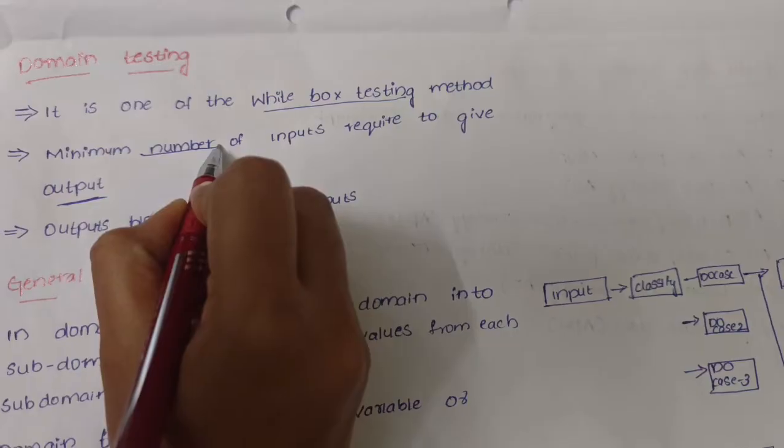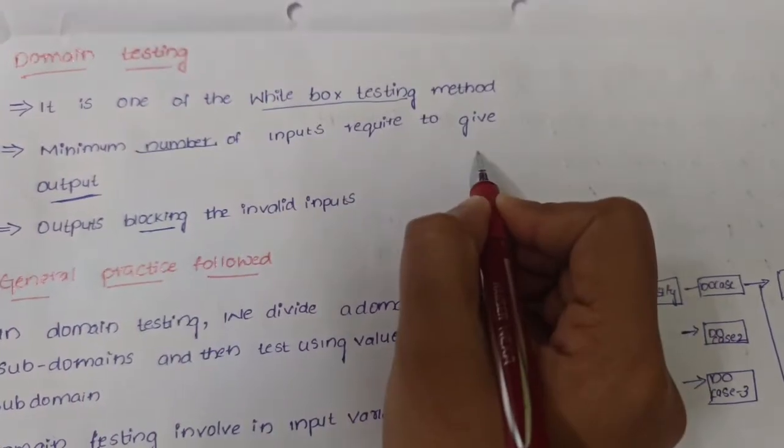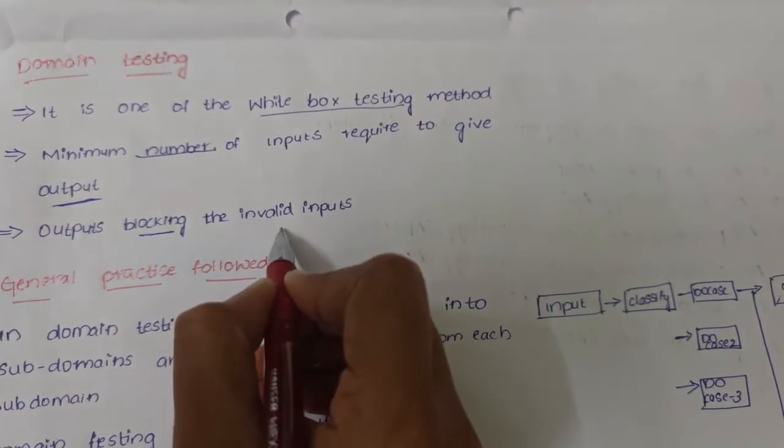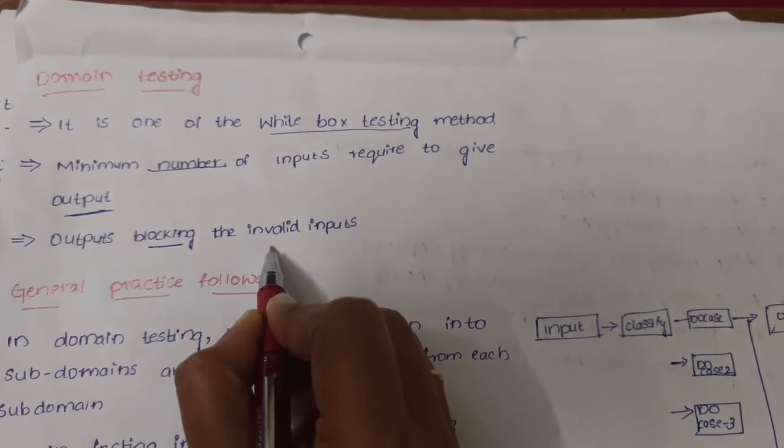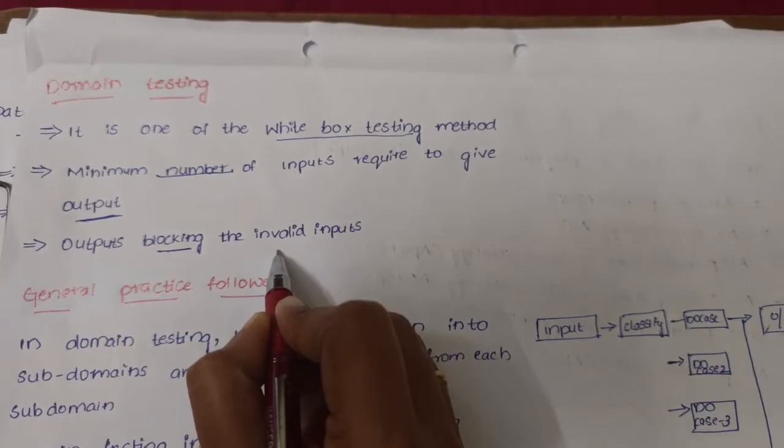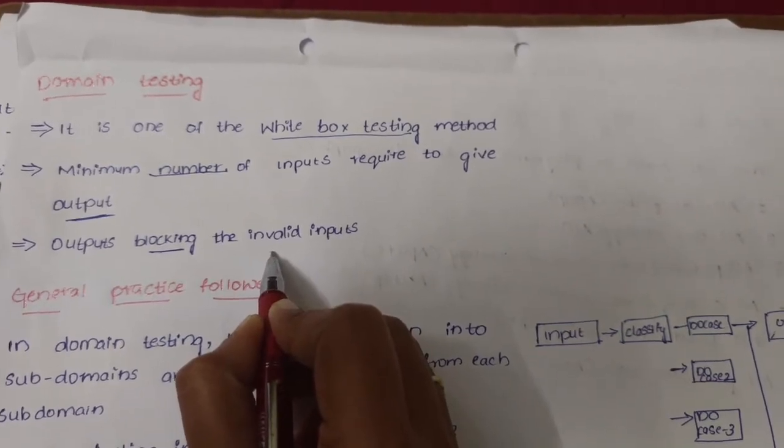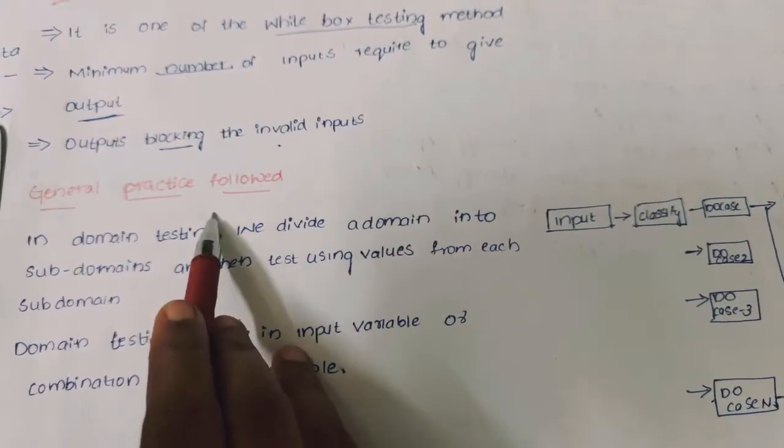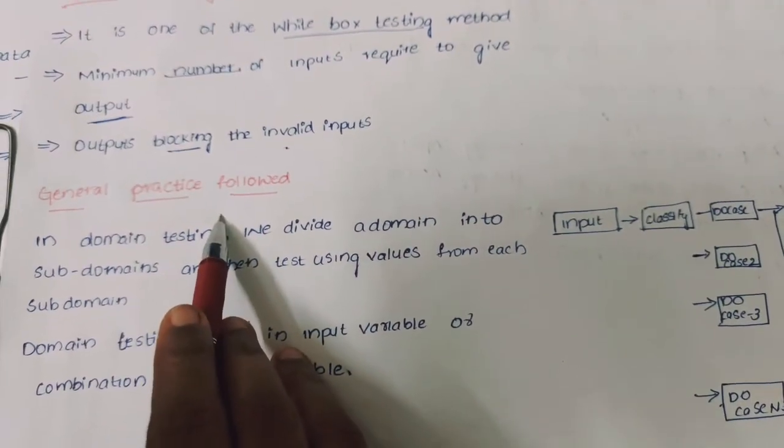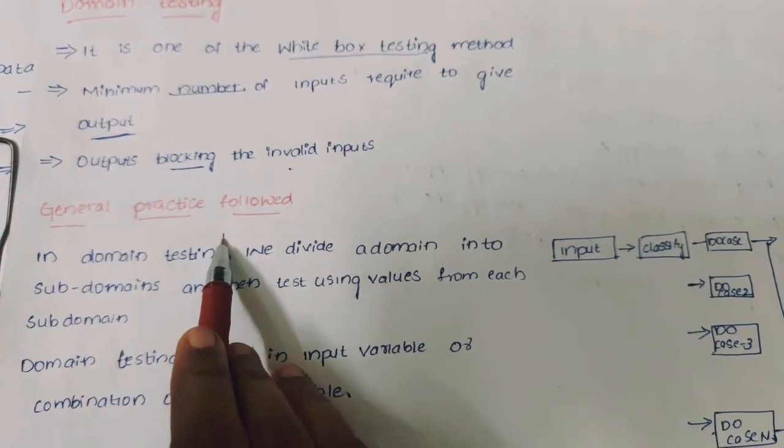The system is expected to ensure it does not accept invalid input values and gives required outputs, blocking the invalid inputs. That is what is followed by domain testing.